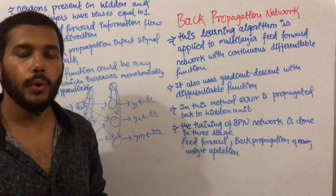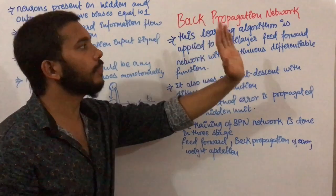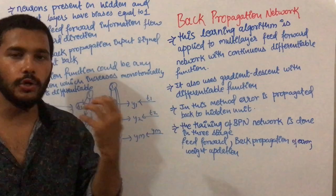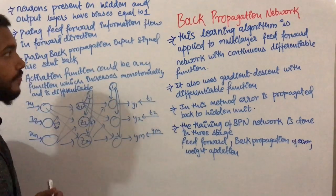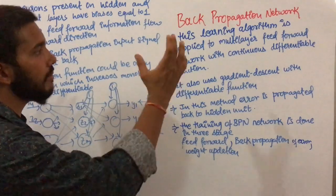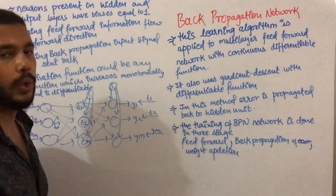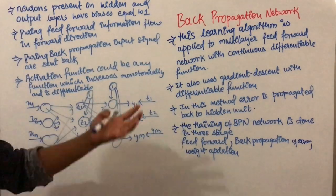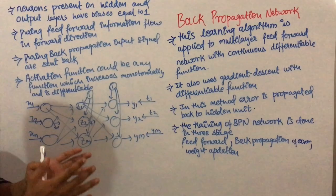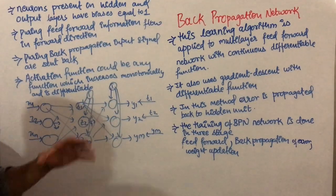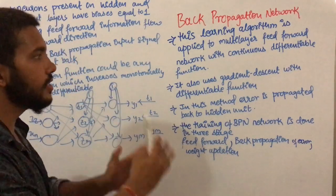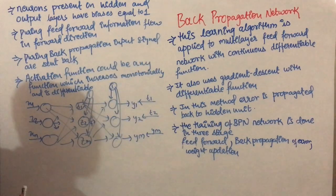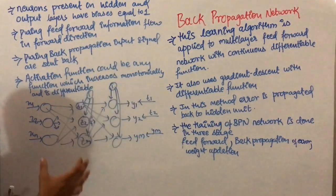In this video I am going to talk about back propagation network. In the previous video we discussed why we need back propagation network. This back propagation network is a multi-layer feed forward network which uses continuous differentiable functions. Hard limiting functions have some limitations, so back propagation uses continuous differentiable functions and also uses gradient descent with differentiable functions.